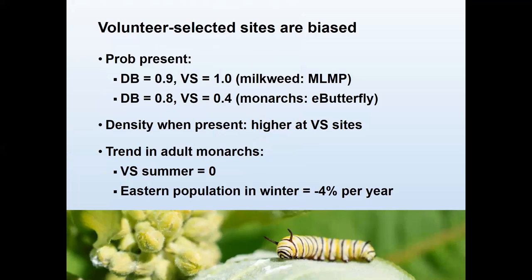We know that volunteer-selected sites are going to be biased. For example, working with pilot data from the Monarch Larva Monitoring Program — as the name suggests, the program monitors larvae, and monarch larvae need milkweed — that program measures milkweed density, but there is not a single site in that program where there's no milkweed. So that's not really representative of the landscape. For adult monarchs, the pilot data we're using are from eButterfly, which is like eBird — anyone can go out, make observations, and submit them to the website, so it's not very standardized in terms of effort or methods.